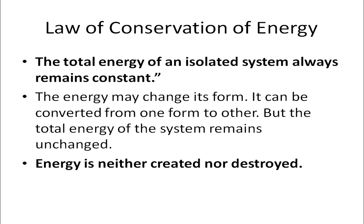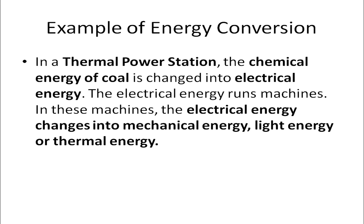The law of conservation of energy states that the total energy of an isolated system always remains constant — energy is neither created nor destroyed. Energy may change its form and be converted from one form to another, but the total energy of the system remains unchanged. For example, in a thermal power station, the chemical energy of coal is converted into electrical energy. This electrical energy runs machines, where it is further converted into mechanical energy, light energy, or thermal energy.